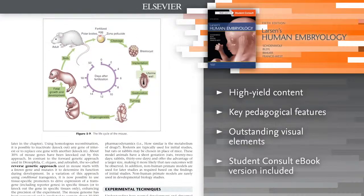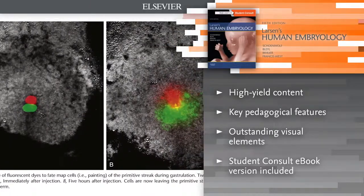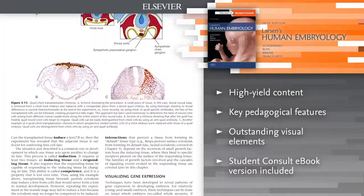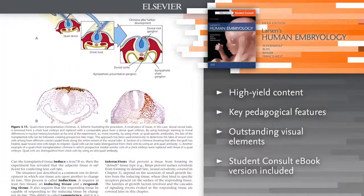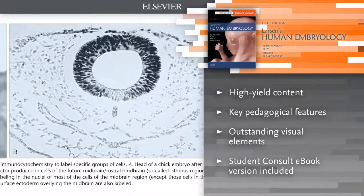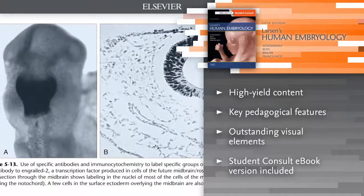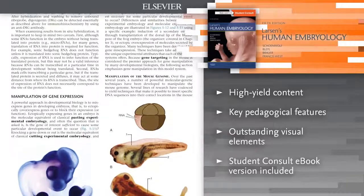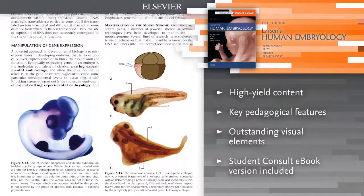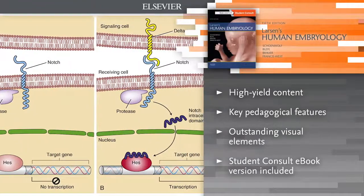Clear descriptions and explanations of human embryonic development based on all of the most up-to-date scientific discoveries and understanding keep you abreast of the latest knowledge in the field. Access high-yield content and quickly locate key information with help from newly condensed text and additional summary tables. Take advantage of key pedagogical features such as opening summary boxes. Visualize complex concepts more clearly than before through a superior art program and outstanding clinical content and images throughout.